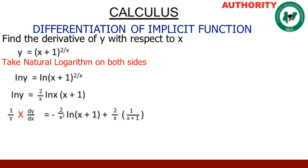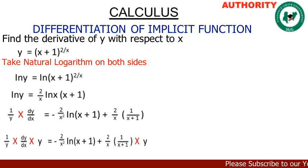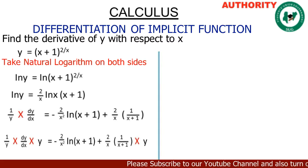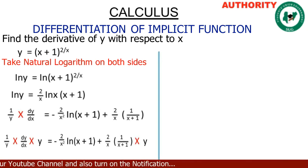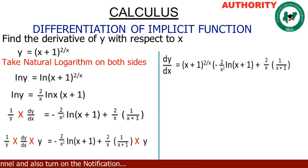Now to make dy/dx the subject, we multiply both sides by y. So dy/dx = y · [−(2/x²)·ln(x+1) + (2/x)·(1/(x+1))].